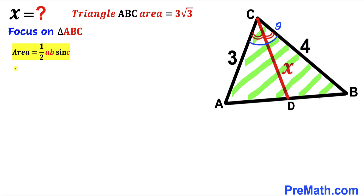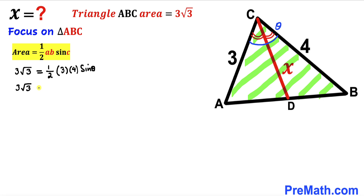Area has been given as 3 times square root of 3, which equals one half times 3 times 4 times sine of theta. Simplifying, 3 times square root of 3 is equal to 6 times sine of theta.